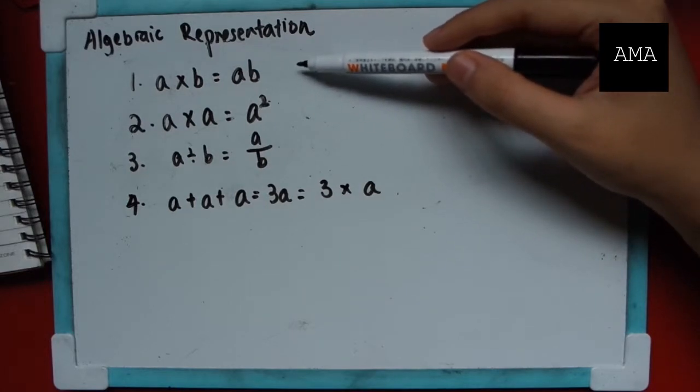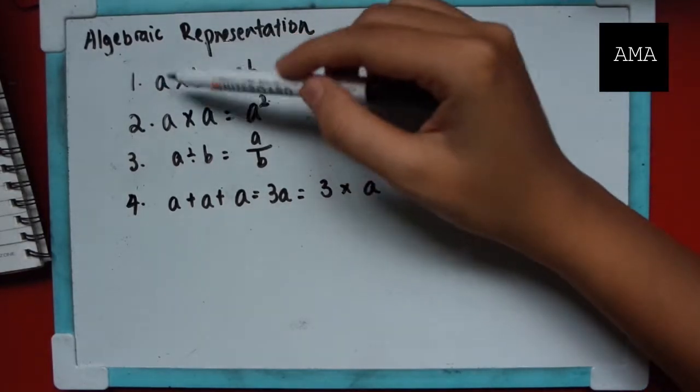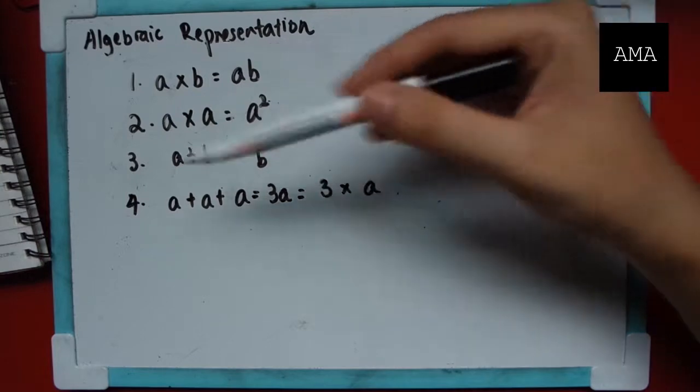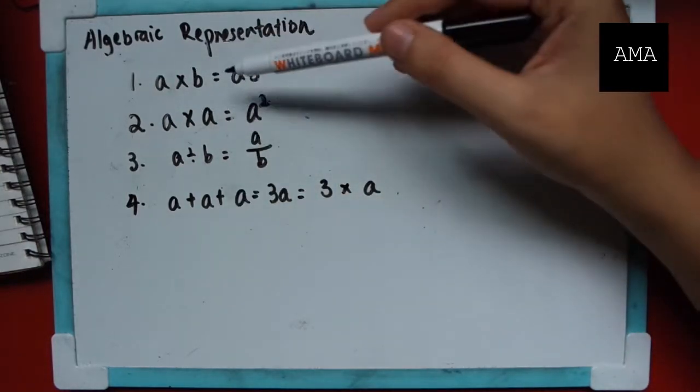In the future when we see algebraic terms, so these things are called terms, we wouldn't see them in this form like a times b. You would just see them as ab.